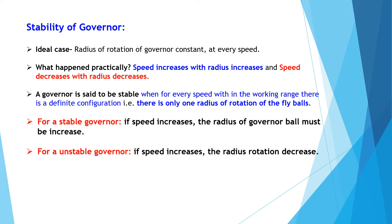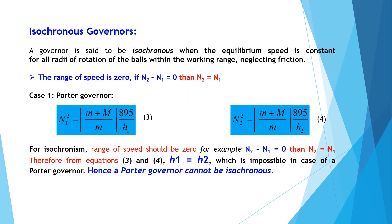The governor is said to be synchronous when the equilibrium speed is constant for all radii of rotation of the balls within the working range. Here we have neglected the friction force, so the range of speed is zero, meaning N2 minus N1 equals zero, which means N_max equals N_min.